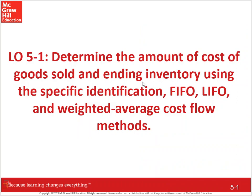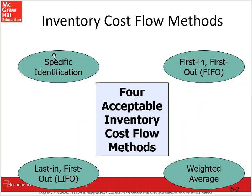We need to start by determining the amount of cost of goods sold and ending inventory using specific ID, FIFO, LIFO, and weighted average cost flow methods. We have four acceptable inventory cost flow methods. I would actually argue that there are only three cost flow methods and specific ID is not a cost flow method at all — it's literal item-by-item tracking. Specific ID may have been the only method you thought existed: we track each and every item of inventory on our books and physically. But the reality is that's not always practical, nor always necessary or beneficial.